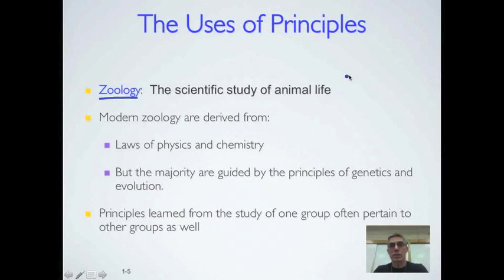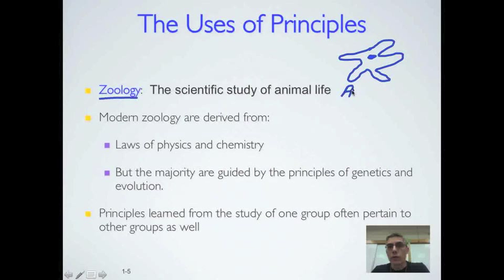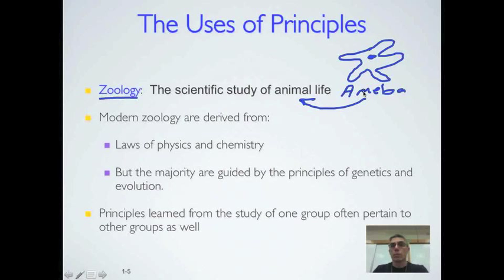When we talk about zoology, we talk about not only things that we can see, but also things that we can't see. If you look up here to the upper right, I have drawn an amoeba. An amoeba is a single-celled creature that is super tiny, something we can't see with the naked eye, so we have to use a microscope. You have to think about zoology as taking into account things as large as a blue whale, but also things as tiny as an amoeba.